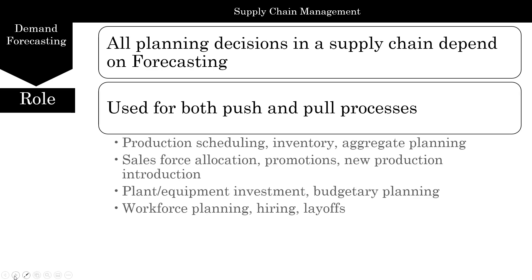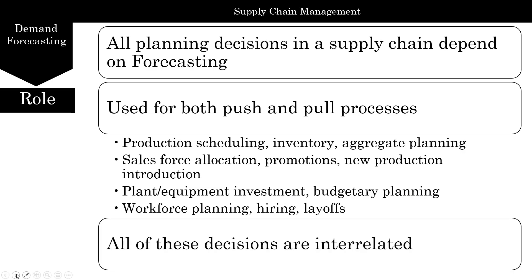Forecasting is used for both push and pull processes, and we use it for production scheduling, inventory management, aggregate planning, sales force allocation, promotions, new product introduction, plant and equipment investment, budgetary planning, workforce planning, and layoffs. All these decisions are linked with each other — if you're going to increase your production, you're going to affect your workforce planning. Similarly, if you want to reduce your production, your inventory might come into play.